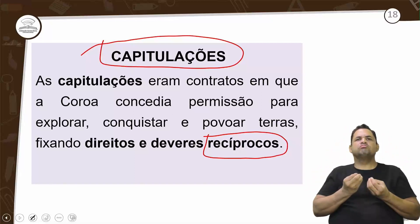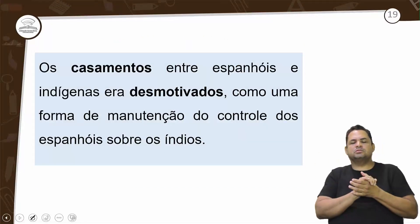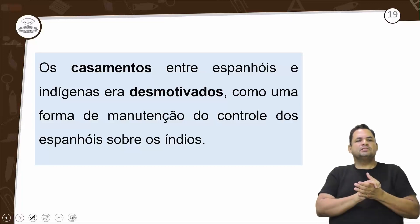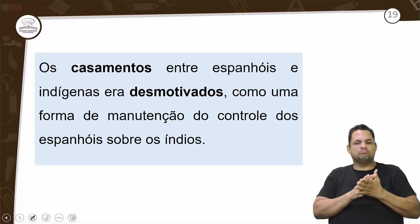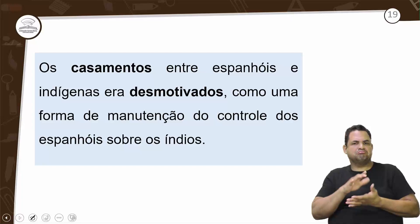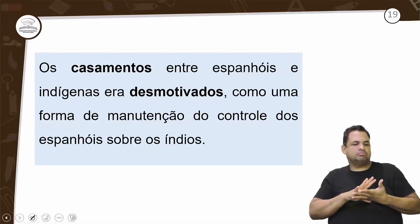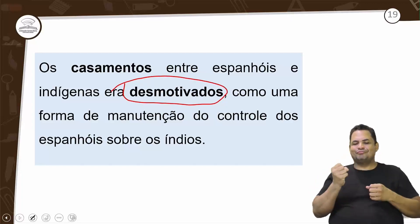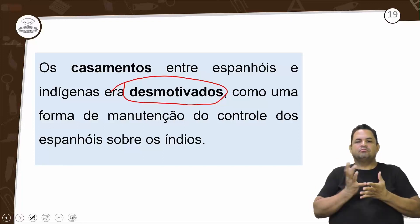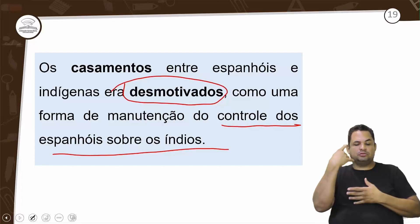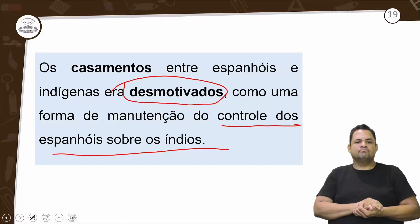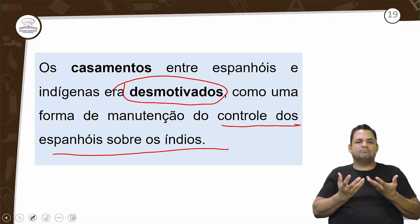Como era o casamento nessa sociedade? Casar com indígena era possível, mas era desmotivado pela coroa. Por quê? Porque eles queriam fazer um controle dos espanhóis sobre os índios. Era uma forma de controle — se começasse a haver miscigenação, ela seria de forma mais branda.